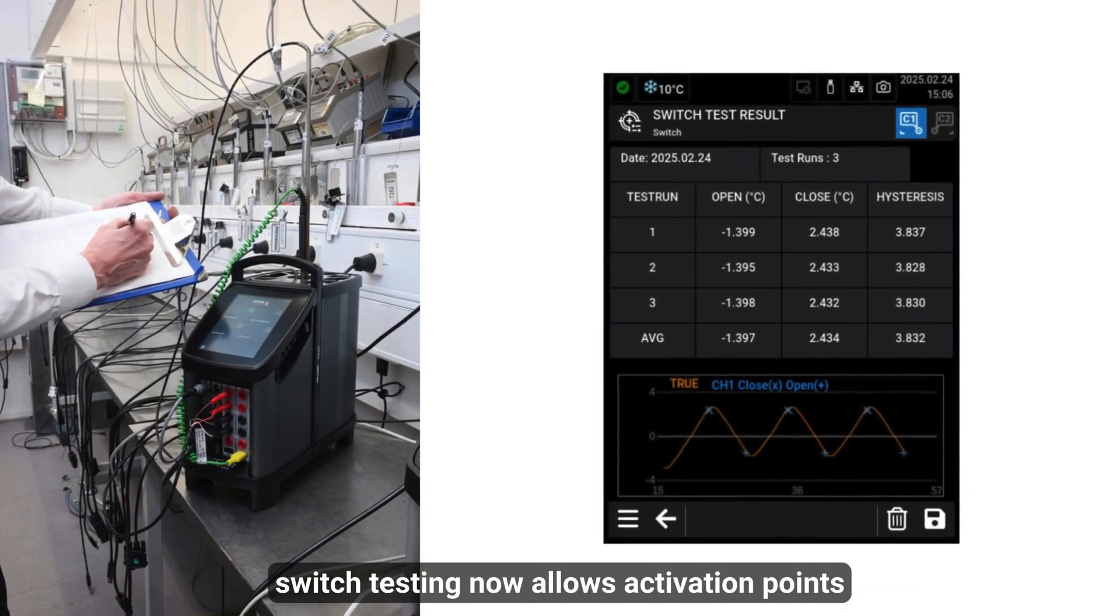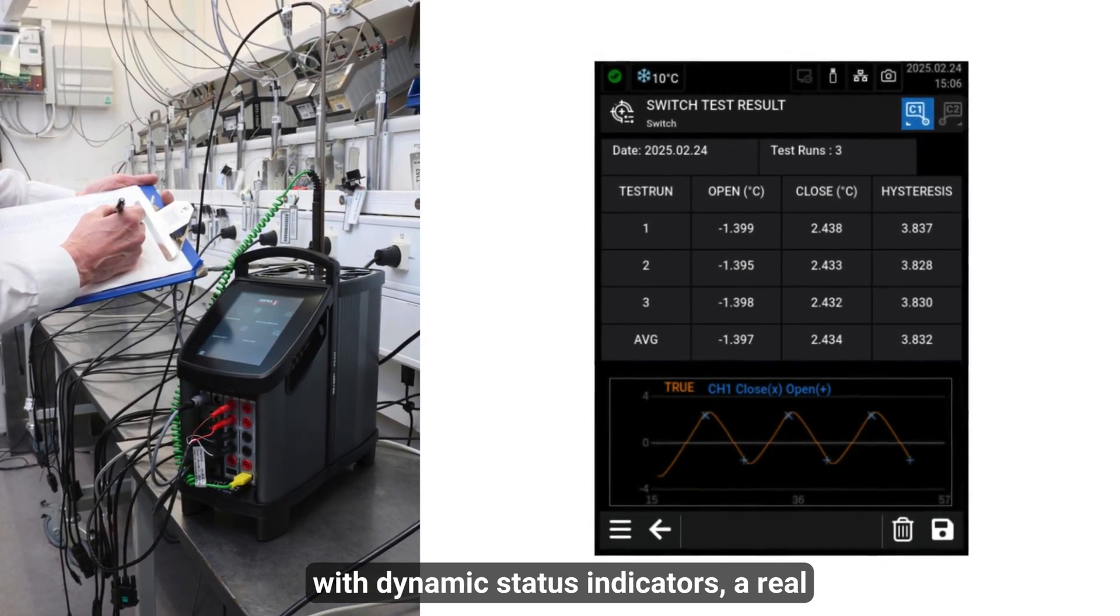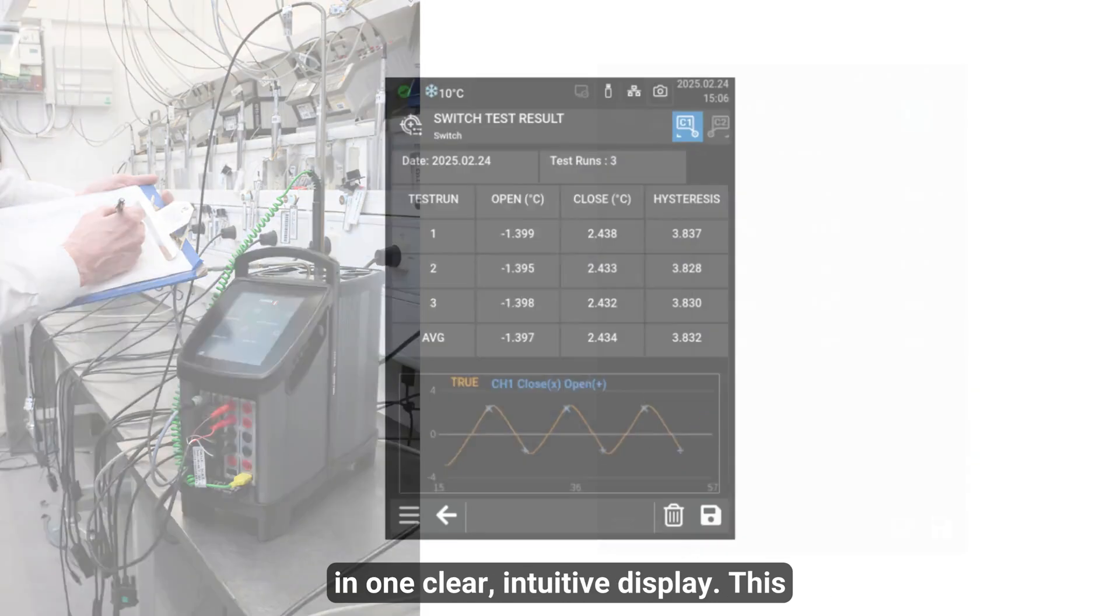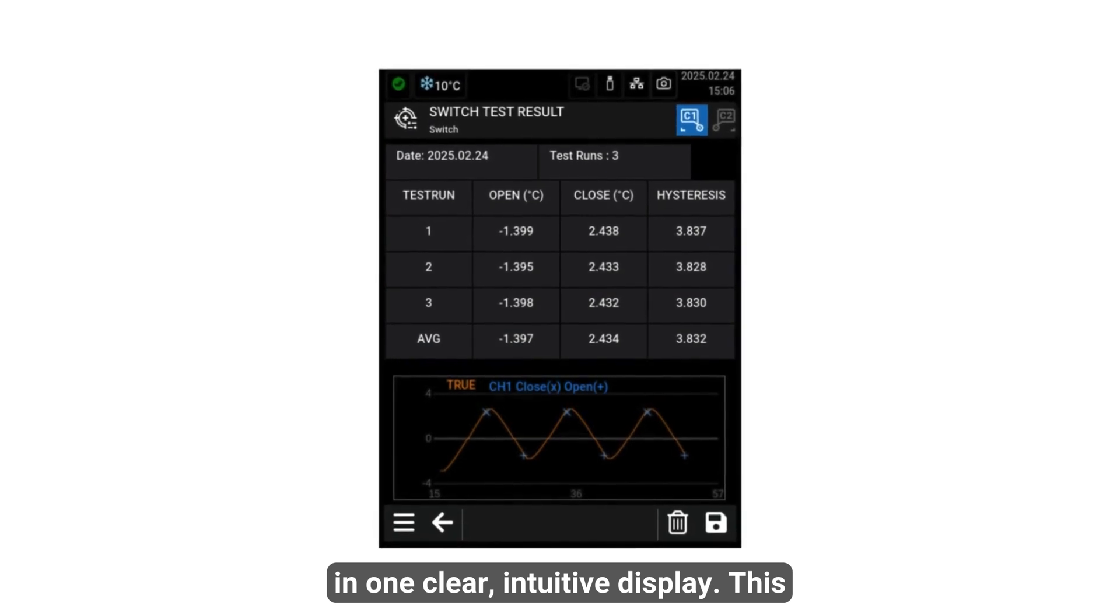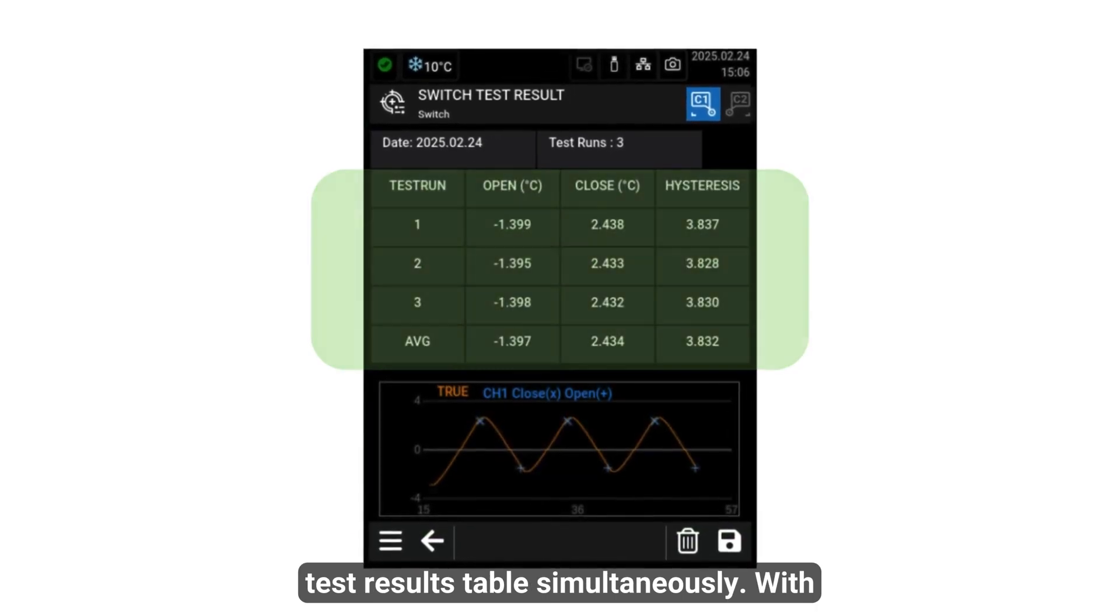Furthermore, switch testing now allows activation points with dynamic status indicators, a real-time graph, and precise test results all in one clear intuitive display. This allows you to view both the switch test graph and test results table simultaneously.